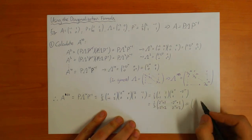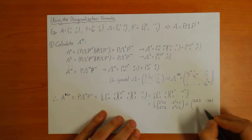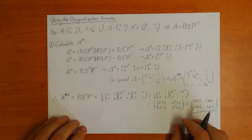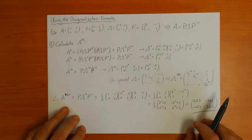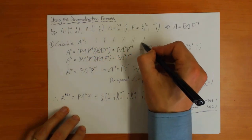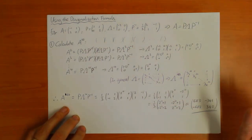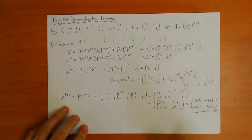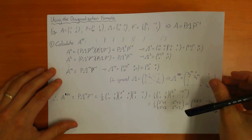If you work that out on a calculator, you get A to the 10 equal to [683, -341; -682, 342]. We got the answer A to the 10 in just five steps — much easier than writing out the matrix A ten times and multiplying all those matrices together. And if you go to the power 20, 50, or a million, the power of this method becomes very clear. That's one use of the diagonalization formula: to calculate powers of matrices.